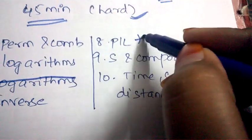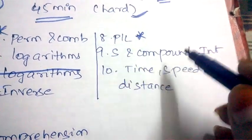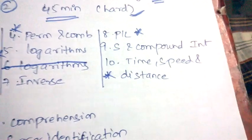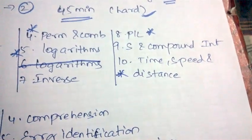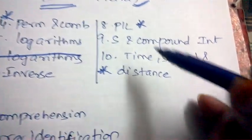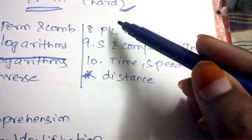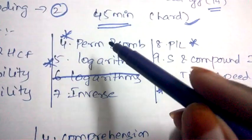And inverse, profit and loss (important), simple and compound interest, time speed and distance (important). So concentrate on all the topics where you need to concentrate more on the important topics which are profit and loss, time speed and distance, permutation and combination, logarithms and probability.